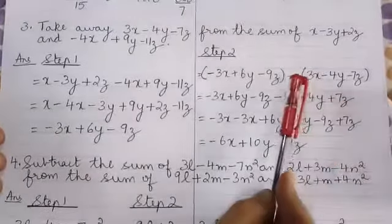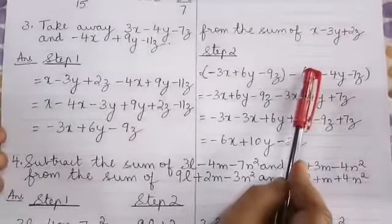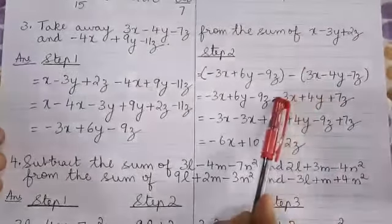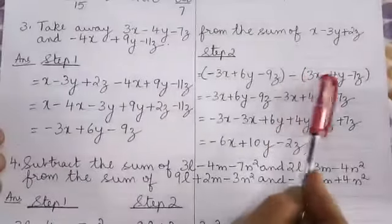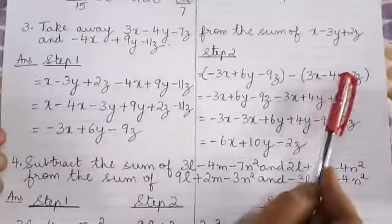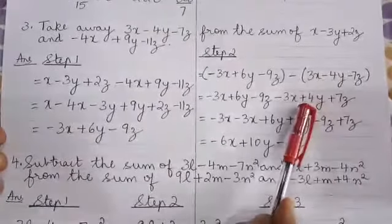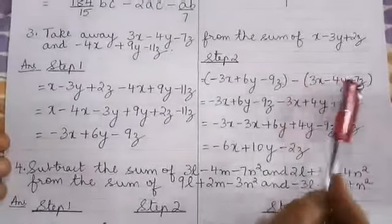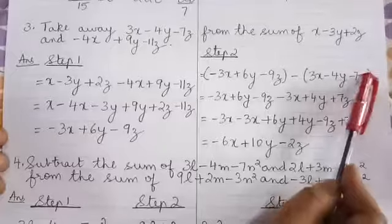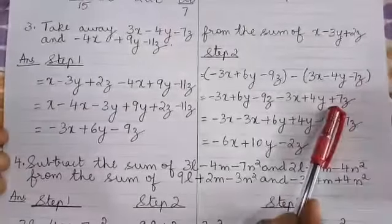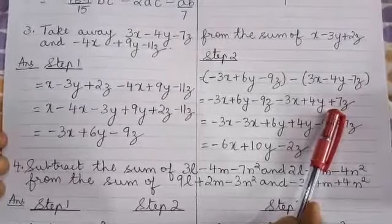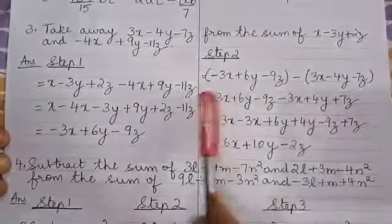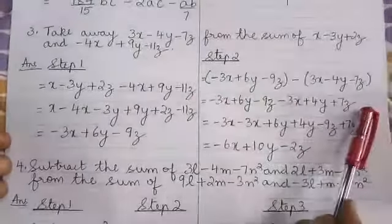To summarize the sign changes: minus into plus gives minus 3x; minus into minus gives plus 4y; minus into minus gives plus 7z. So we have removed the two brackets.